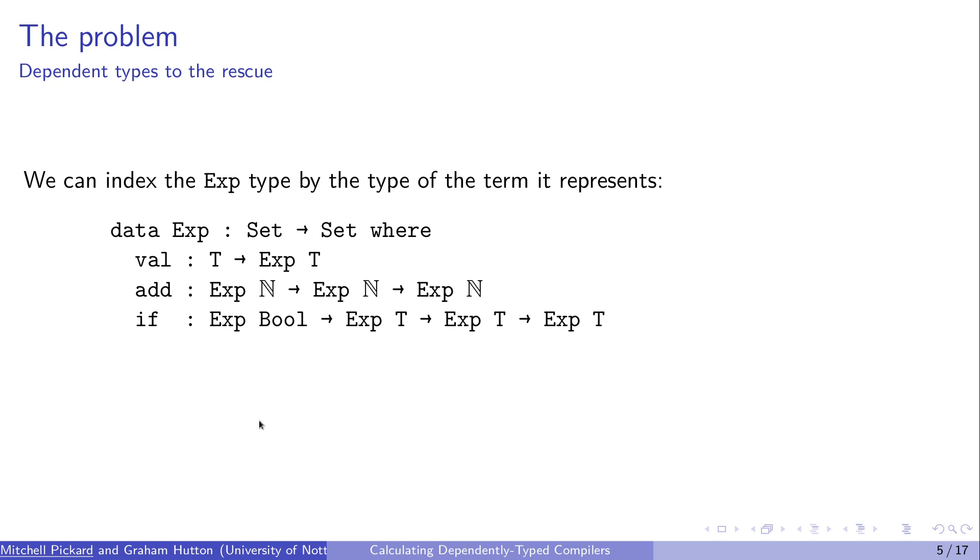So we're going to use an intrinsically typed representation in Agda, so this is where the dependent types come in. If you're not familiar with dependent types, this is where we index this expression by the type of the term it represents. So instead of just exp expression, it would be exp of bool or nat, for example.